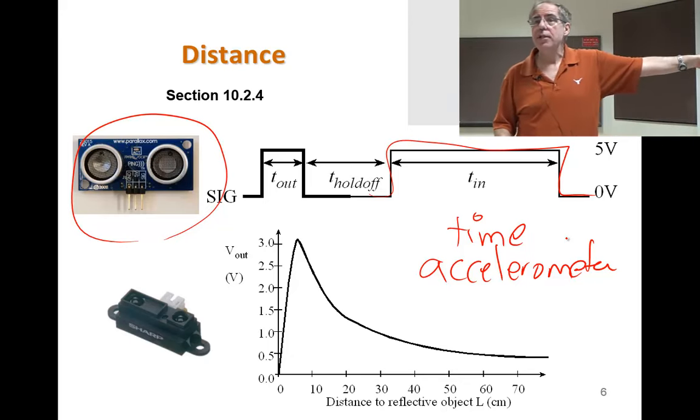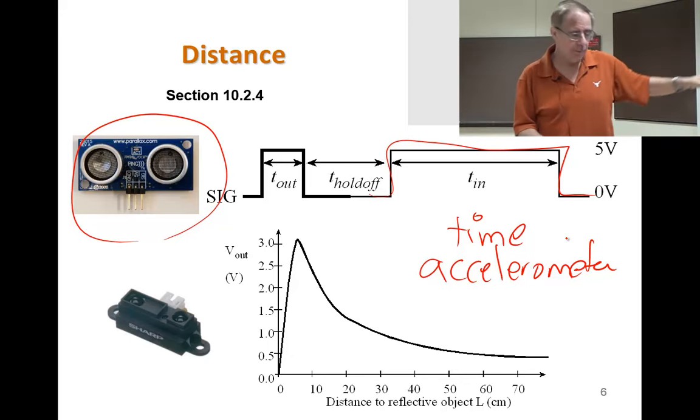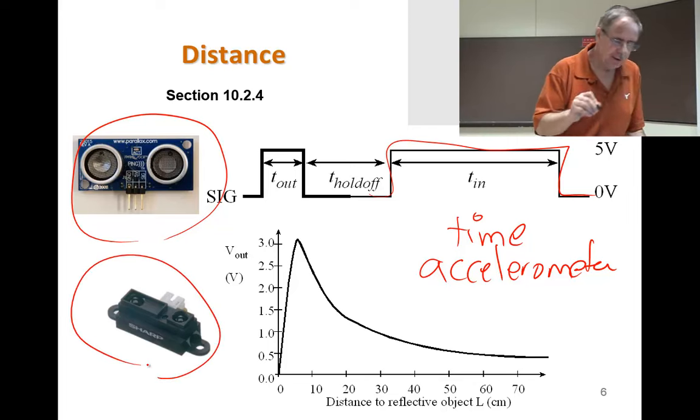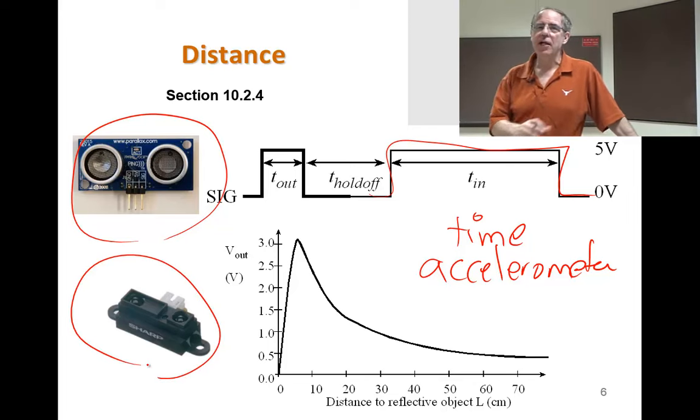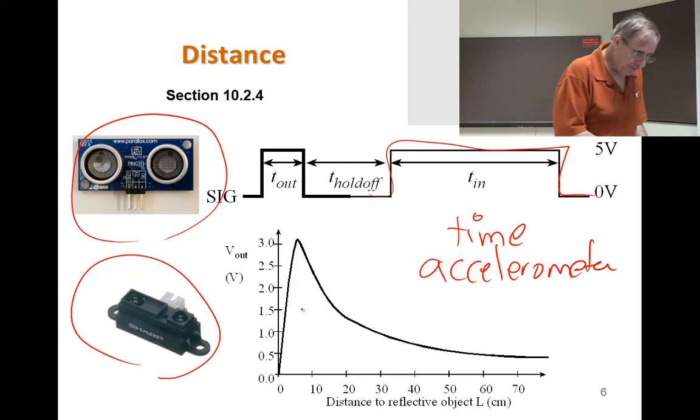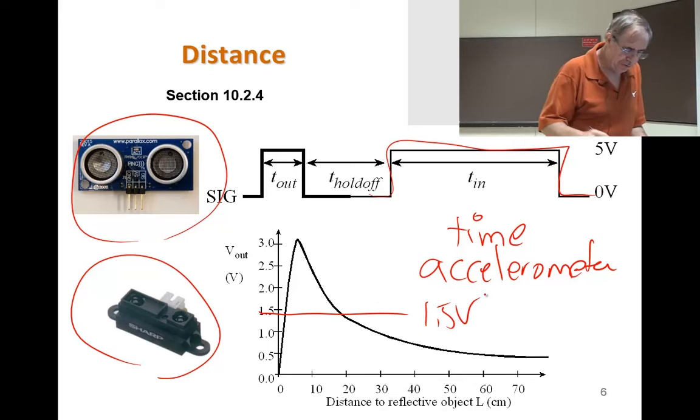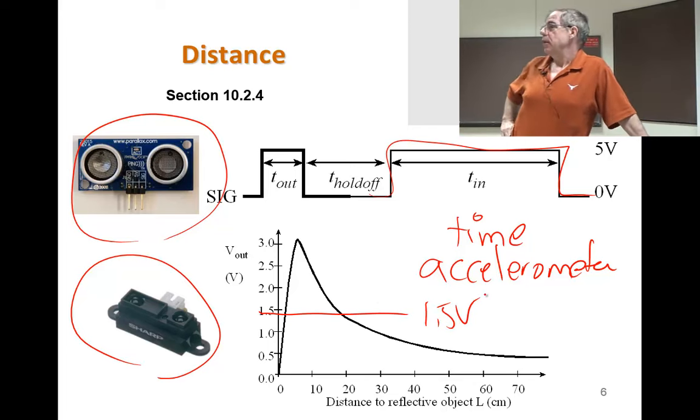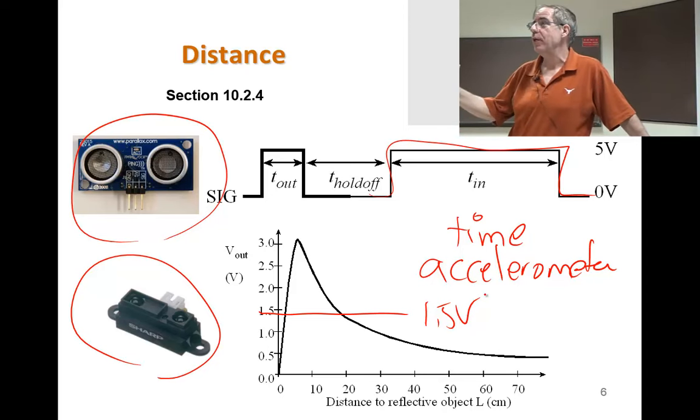Another time measurement is the accelerometers. Accelerometers basically will generate a pulse or a frequency or a pulse width, which is a function of acceleration. So this is a time measurement. And then, who's got the box? Lift up the one that looks like this. This one's got an awesome ability. Look at this waveform. What if you read 1.5 volts? How far away is the object?